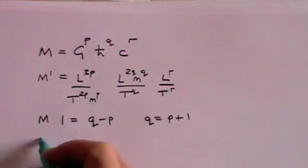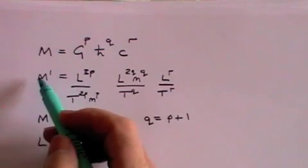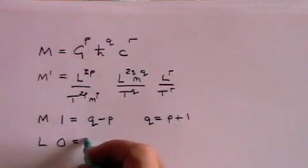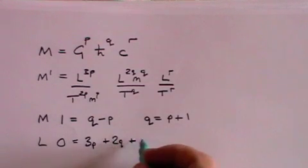Now let's look at length. Well there are no length terms on this side of the equation, so that is 0. But on this side we've got 3P plus 2Q plus R.